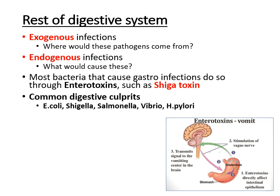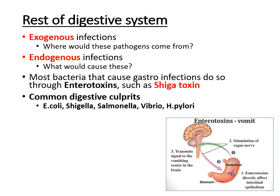Common digestive infections include E. coli — you hear a lot about lettuce contaminations — Shigella causing dysentery, Salmonella causing gastroenteritis or typhoid fever, Vibrio causing seafood or shellfish poisoning, and H. pylori, which is the cause of ulcers. For staphylococcal food poisoning, Staph aureus — identified by coagulase testing — causes problems through temperature abuse. You cook the food thinking you've killed the bacteria, then handle it and leave it at room temperature.